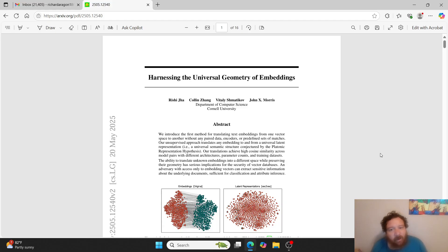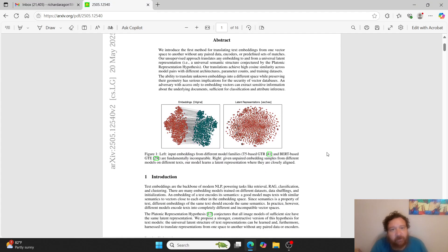The ability to translate unknown embeddings into a different space while preserving their geometry has serious implications for security of vector databases. No kidding. An adversary with access only to embedding vectors can extract sensitive information about the underlying documents sufficient for classification and attribute inference. Man, if only someone had pointed this out like a year ago plus.